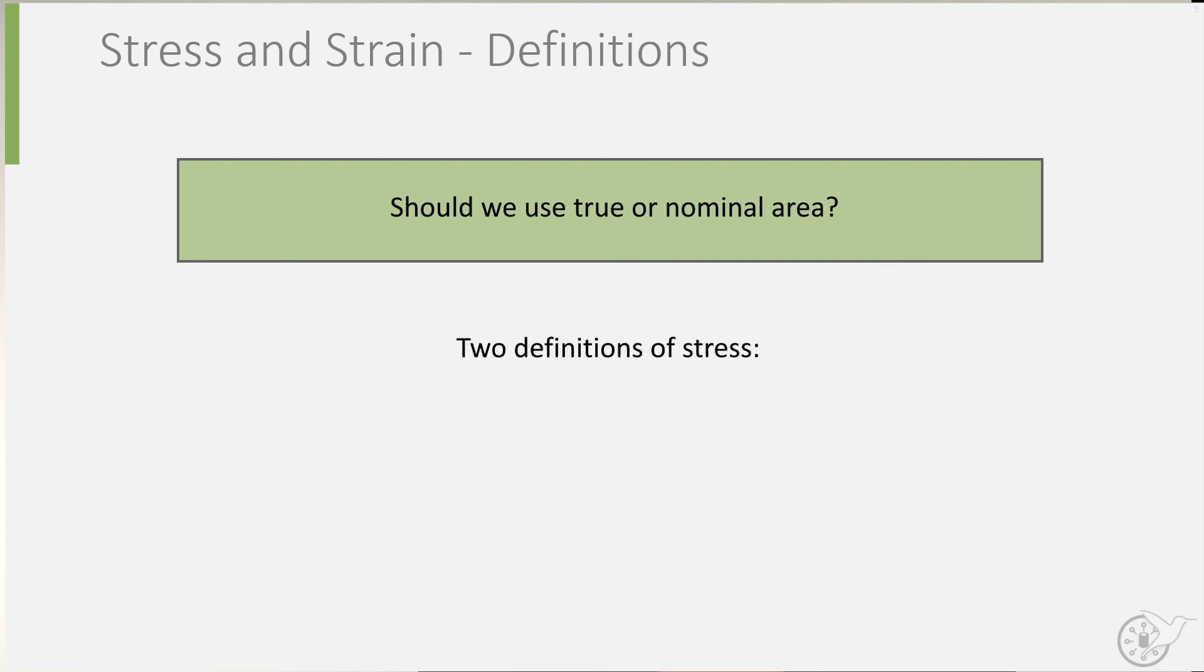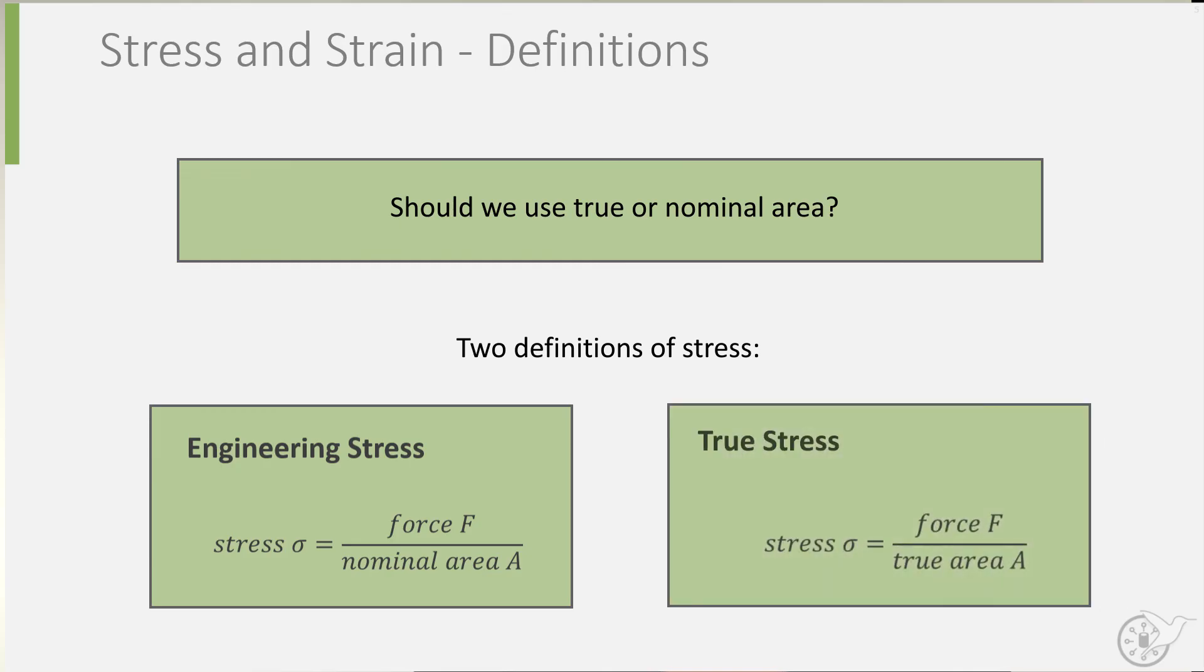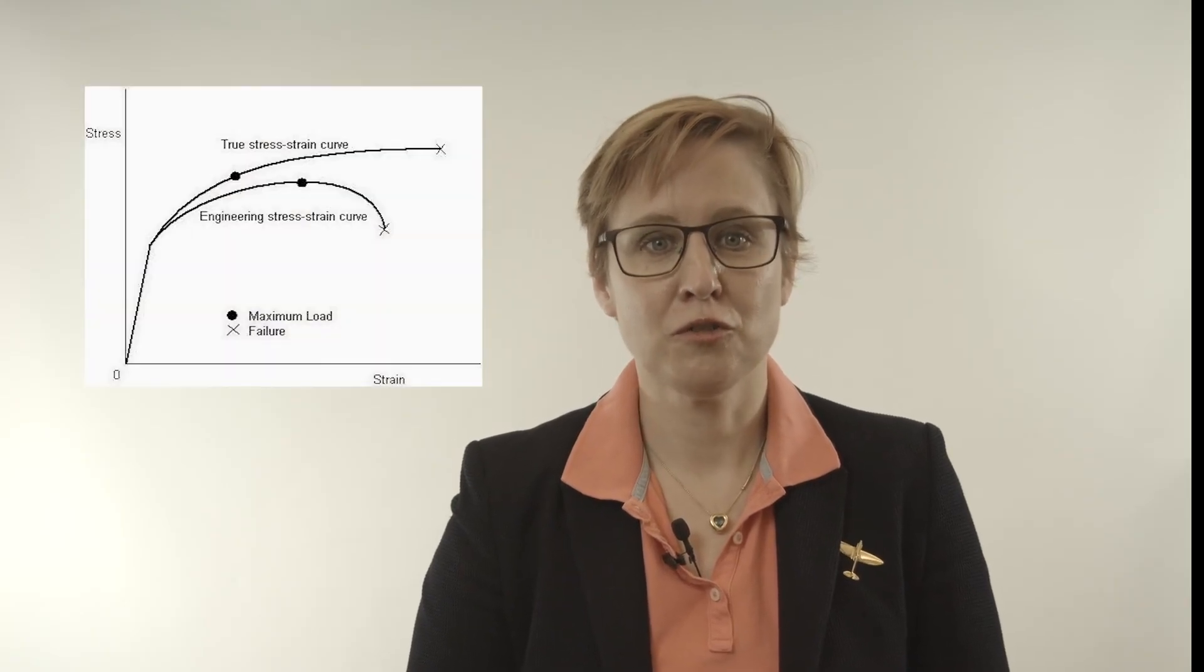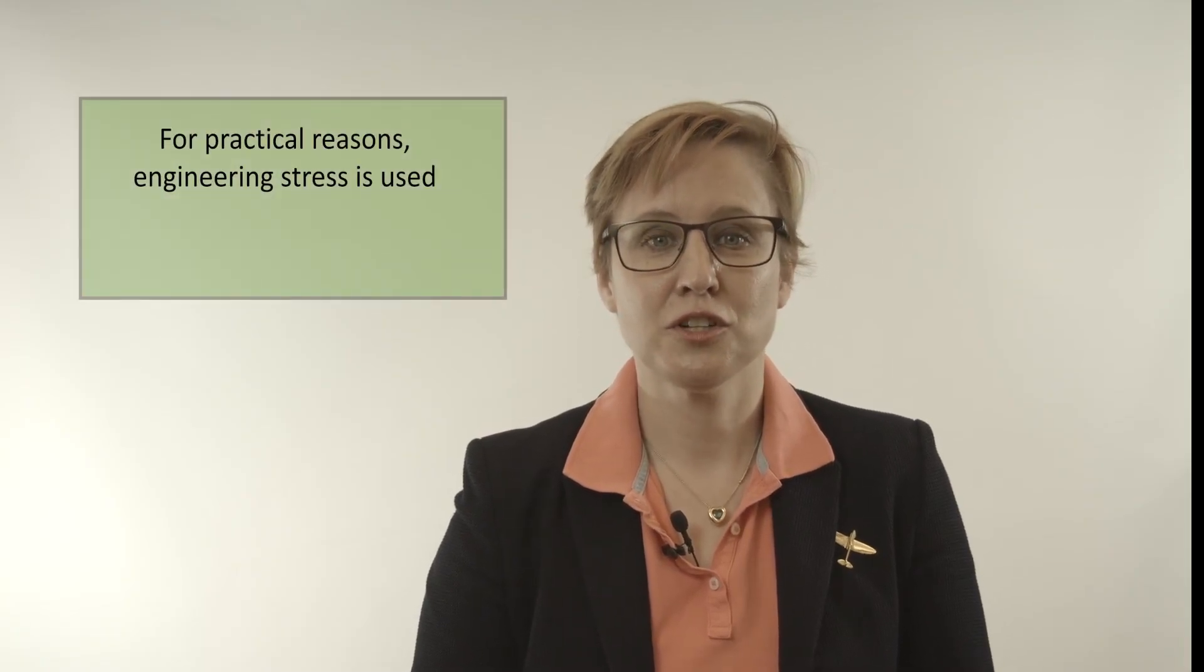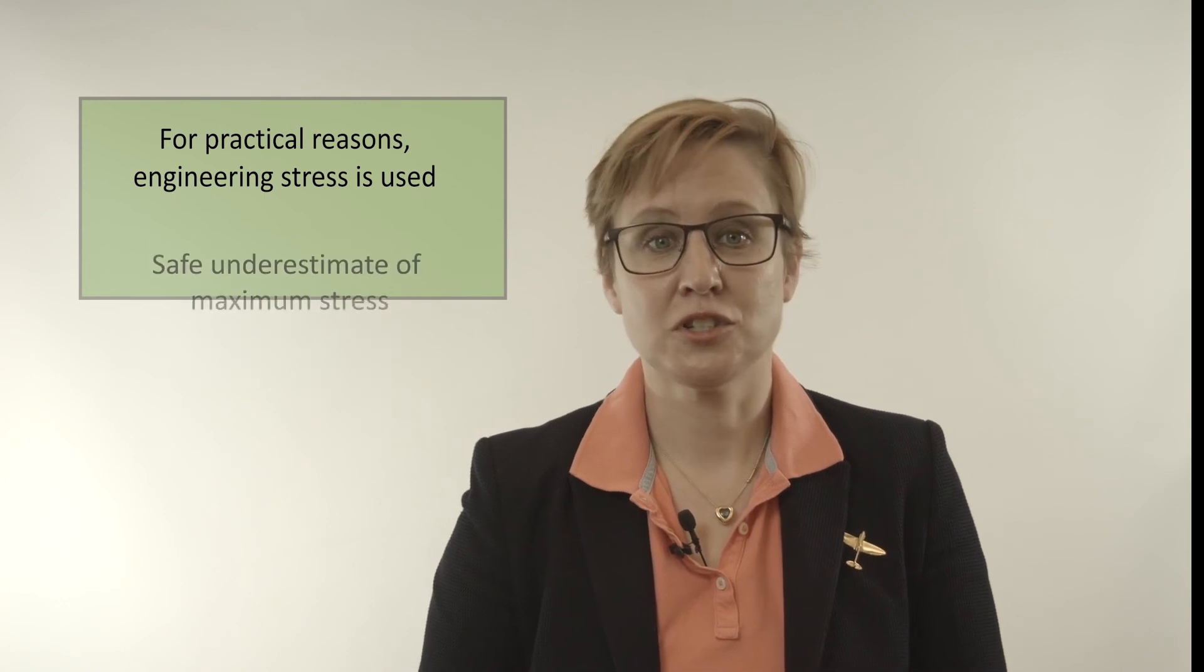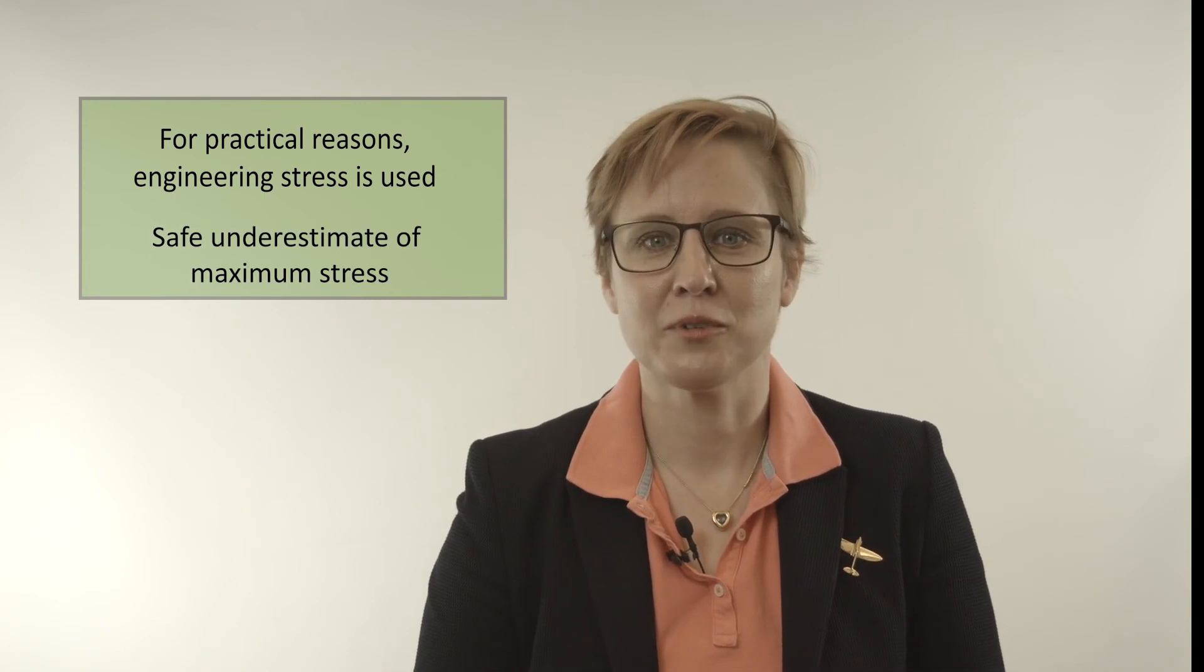This is why in engineering, we have defined two types of stresses. Engineering stress, which is defined as the force F divided by its nominal or original area, and true stress, which is defined as the load F divided by the true area A. The consequence of this is that if you were to plot the true stress instead of the engineering stress in a stress strain curve, the true stress will continue to increase until failure is reached. However, it is very difficult to determine the actual cross-section during testing, so for practical reasons, the engineering stress is used in stress analysis, which is a safe underestimate of the maximum stress the material can withstand.